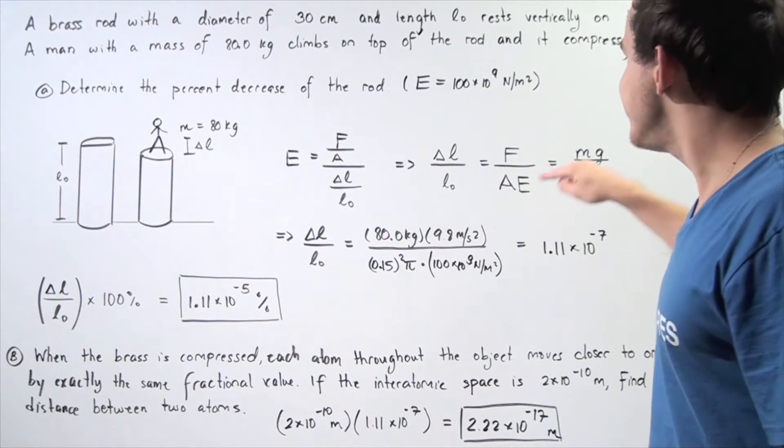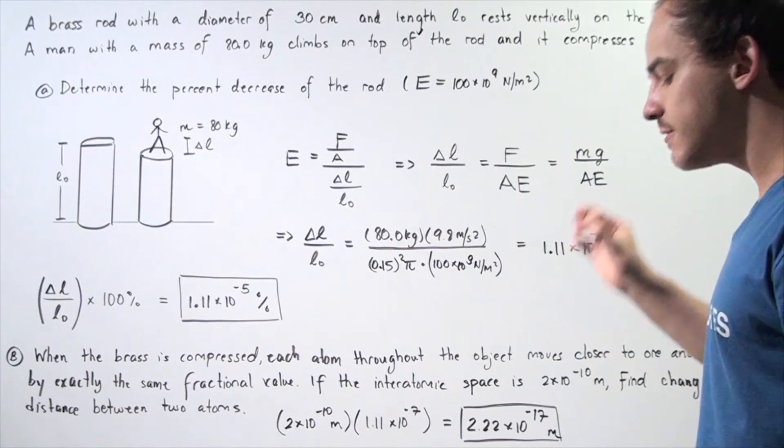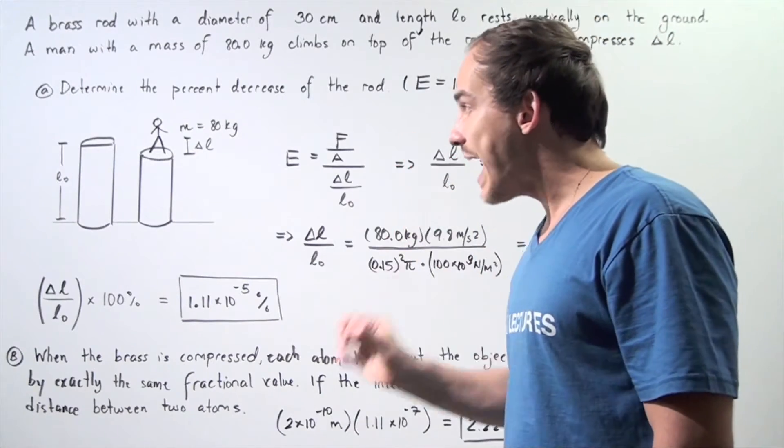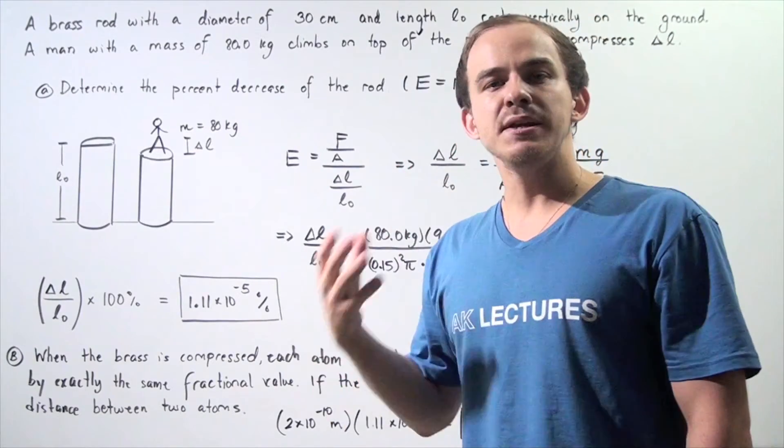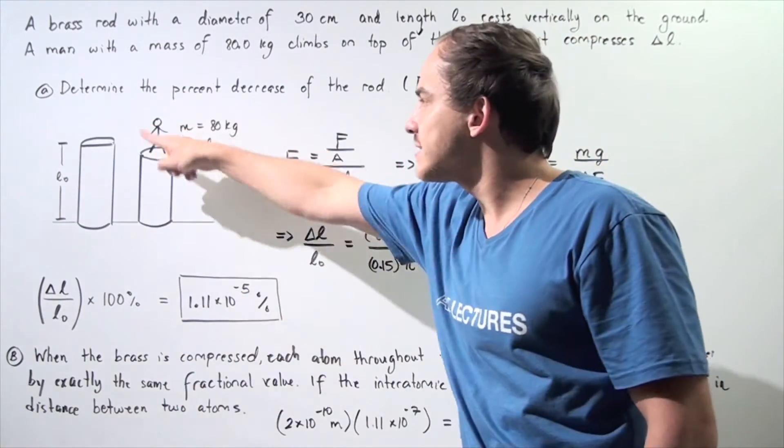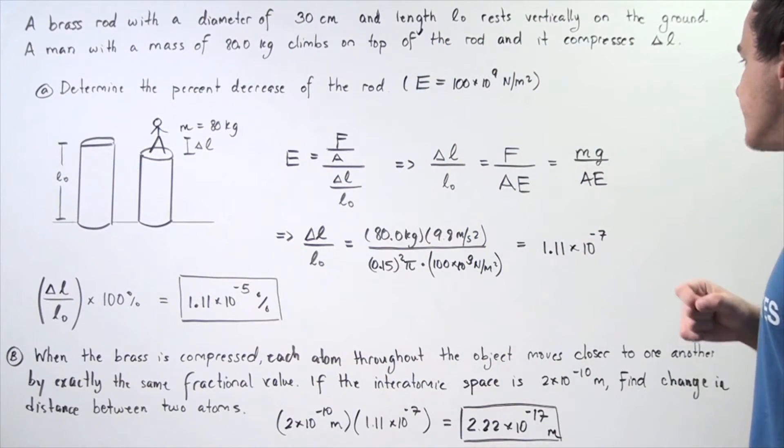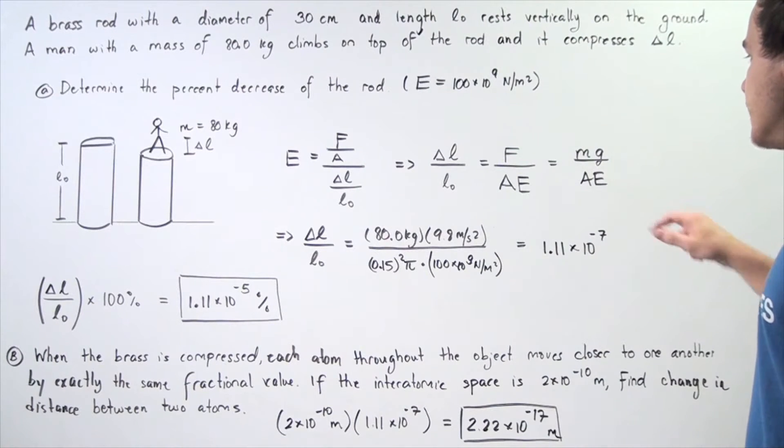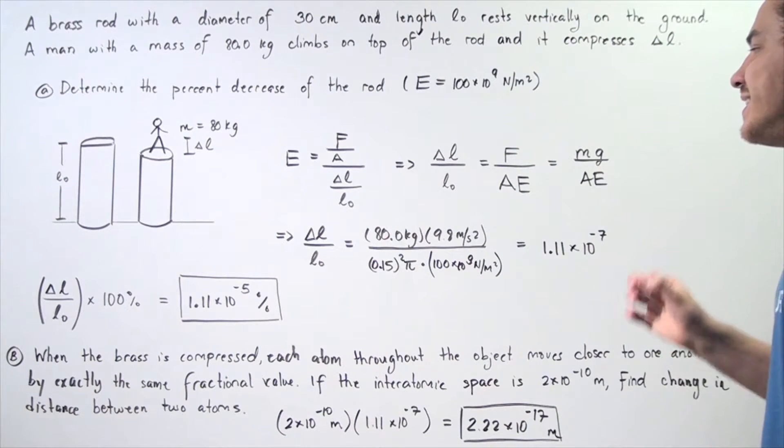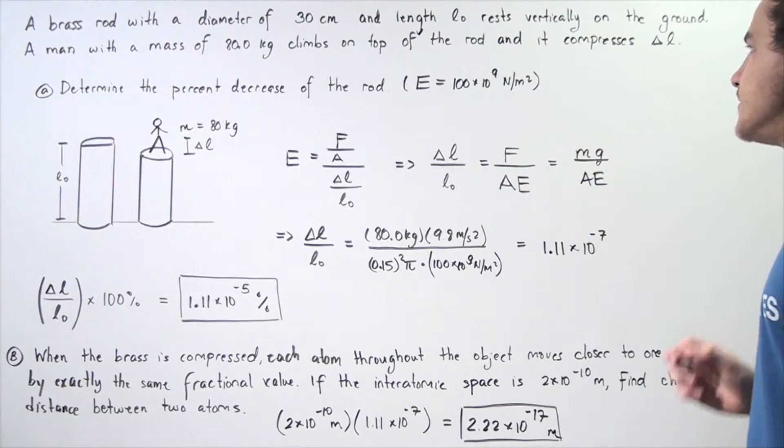Now, force is simply M times G, because the force that acts on the rod is simply mass times G, mass of the object, the person, times the gravitational constant. So, we know what M is, we know what G is, we know what E is, and we can calculate what A is.